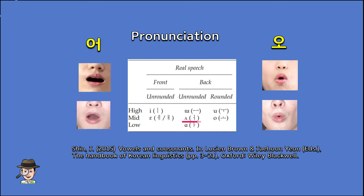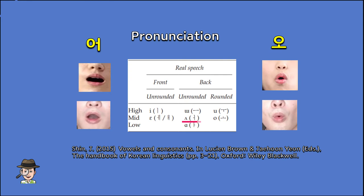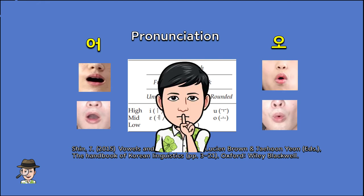What about 어? Everything remains the same except the shape of your lips. Your lips should be unrounded and not really protrude. Just open your mouth and say 어. Again, it should be the same sound from the beginning to the end. If you put a finger in front of your lips, your lips should be pressing the finger when you say 오, but not when you say 어, or not as much, because your lips are not really protruding.